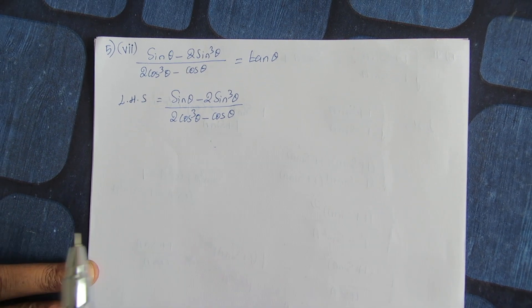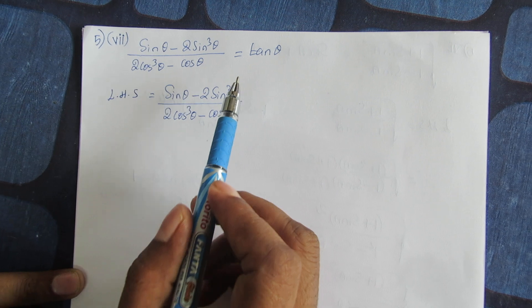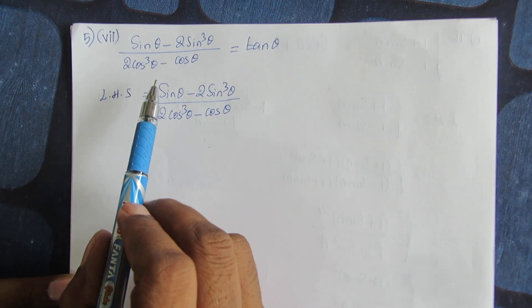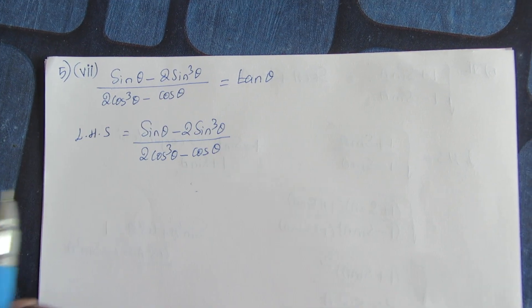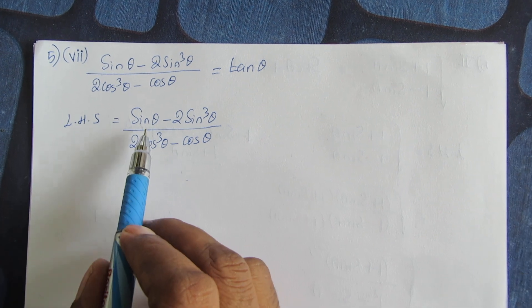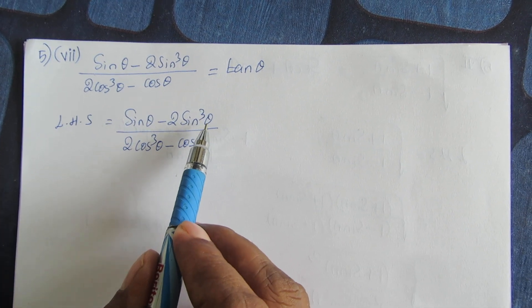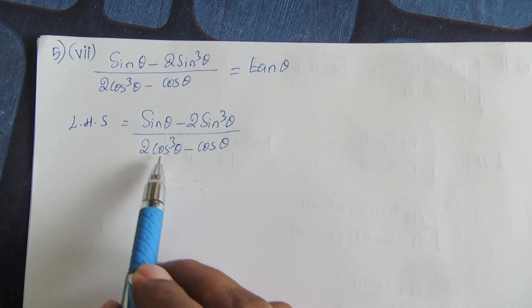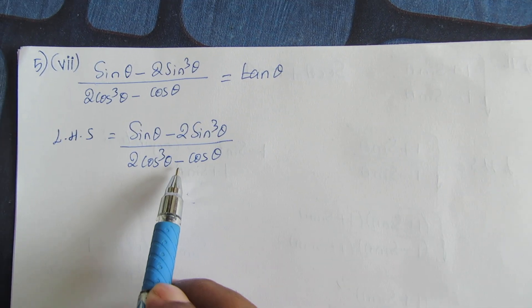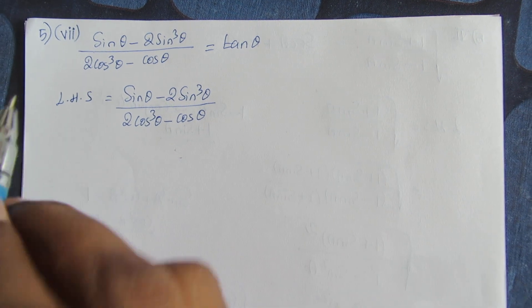Hello students, let us solve this question. First let us solve the left hand side, and we will get the right hand side. So left hand side is sin theta minus 2 sin cube theta divided by 2 cos cube theta minus cos theta.